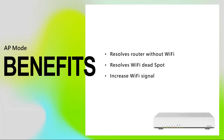Let me share with you the benefits of using AP mode. First, it can resolve routers without Wi-Fi. There are still routers out there that have no Wi-Fi or have an old 11N router. Another way to improve user experience is to buy a Wi-Fi router and set it as AP mode. Wireless clients can then connect to the Wi-Fi at higher speed. Second, it can resolve Wi-Fi dead spots. If you have a large home or a house with a unique shape where there are areas where Wi-Fi signal is completely dead — called a dead spot — putting a Wi-Fi router in AP mode in these locations can solve that issue.